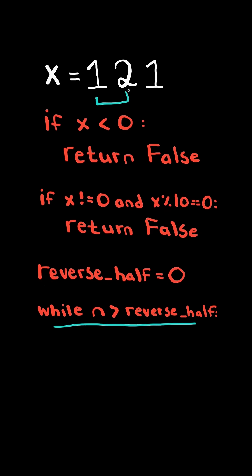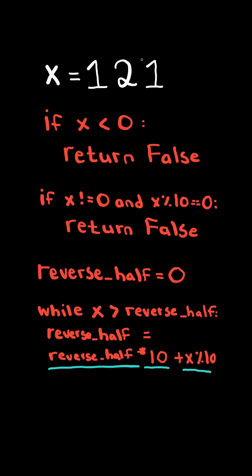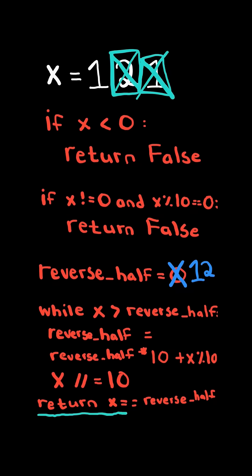Iterate through half the number. We will construct reversed half by taking itself, multiply it by 10, and adding the last digit of x. Now reversed half will be 1, and we want to remove the last digit of x. Finally, at the end, we want to return if x equals reverse half.